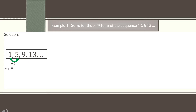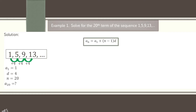From 1 to 5 is plus 4, 5 to 9 is also plus 4, and 9 to 13 is also plus 4. So our d is positive 4. Next, the number of terms we are going to find is the 20th, so n is equal to 20. Since we are solving for a sub n, our 20th term is the unknown.